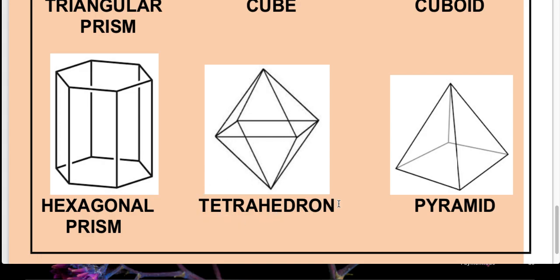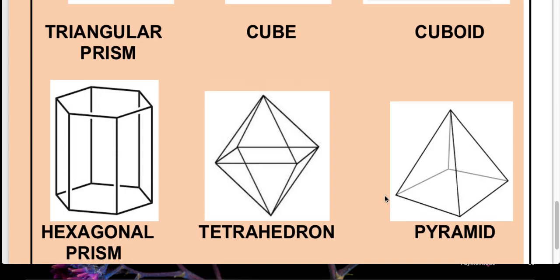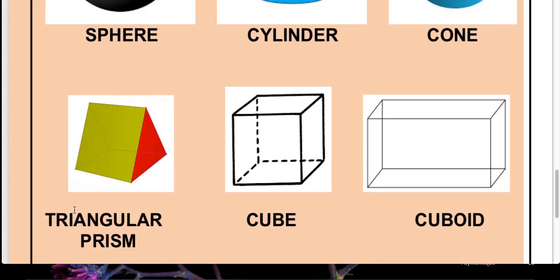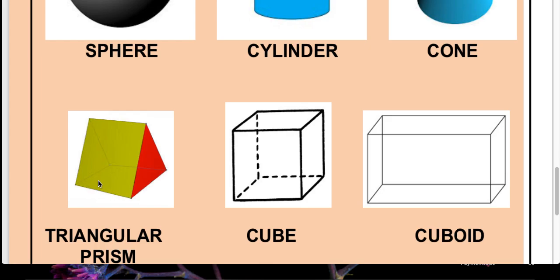After pyramid, we can see the tetrahedron, which is again a 3D shape. It can be seen as a combination of two pyramids. Similarly, a pyramid's base can be a square or rectangle, or if the base is a triangle it becomes a triangular pyramid. So you have seen different 3D shapes — pyramid, tetrahedron, hexagonal prism, triangular prism. This is the video about different 2D and 3D shapes.